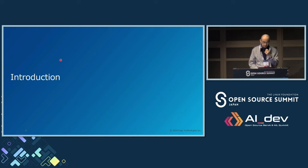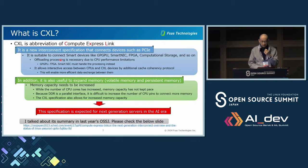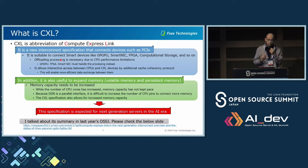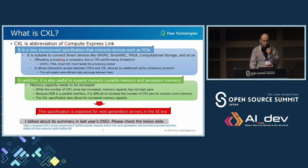Let's start with the introduction. What is CXL? CXL is an abbreviation of Compute Express Link. It's a new interconnect specification that connects devices such as PCI Express. It's suitable for connecting smart devices like GPGPU, SmartNIC, FPGA, computational storage, and so on. Off-loading processing is necessary due to CPU performance limitations.